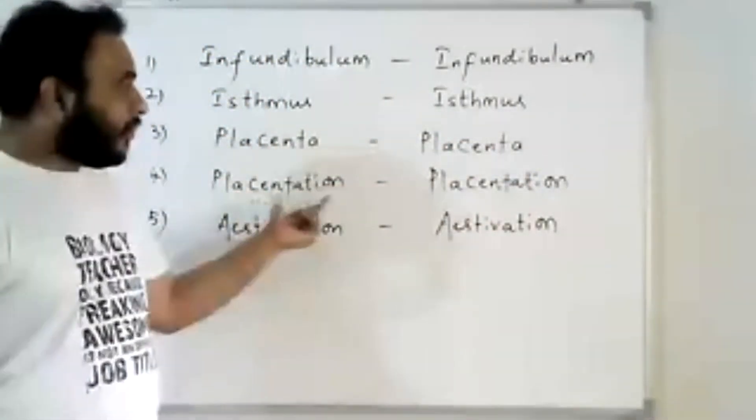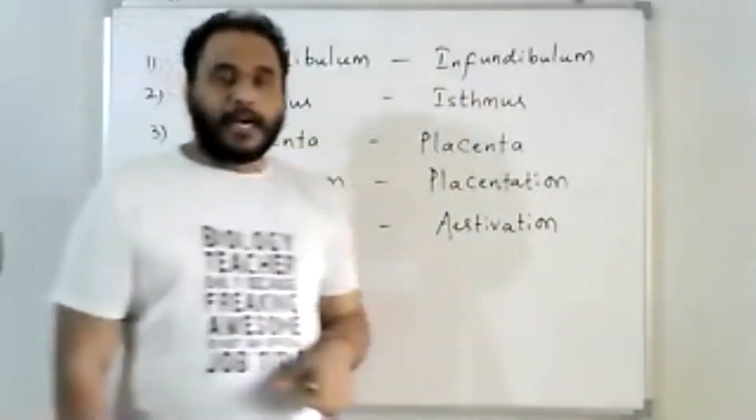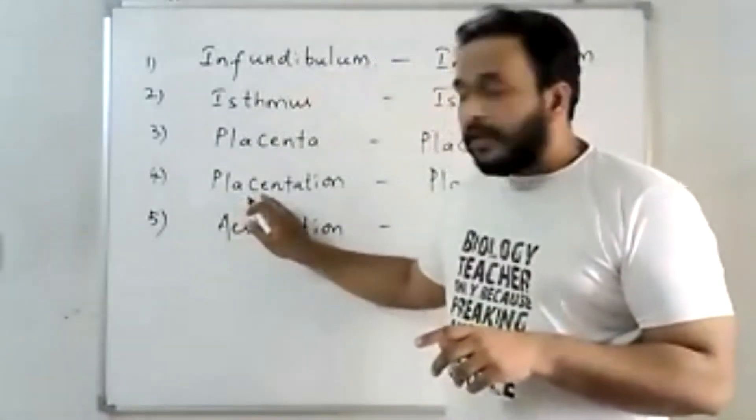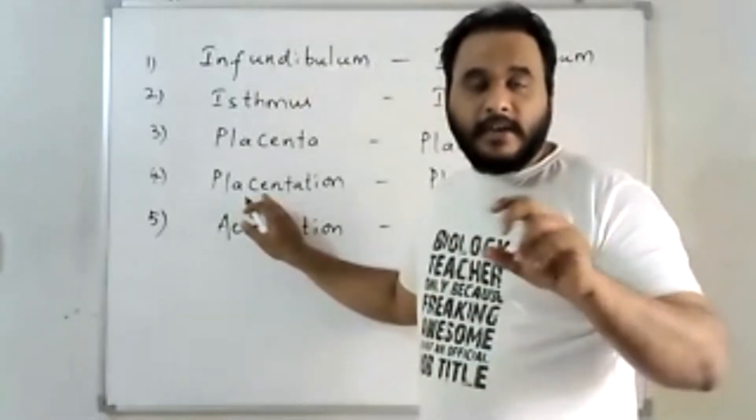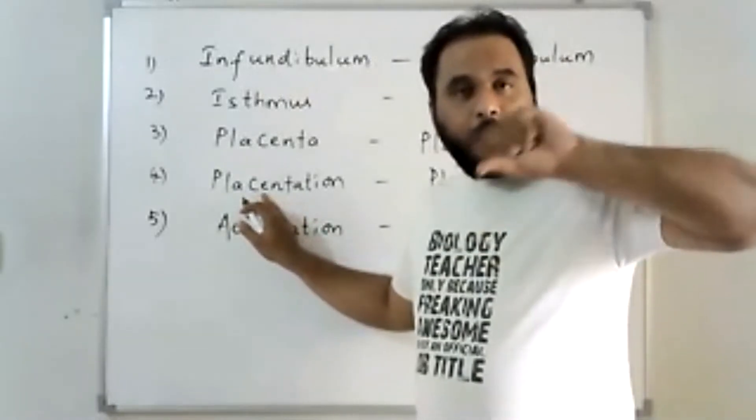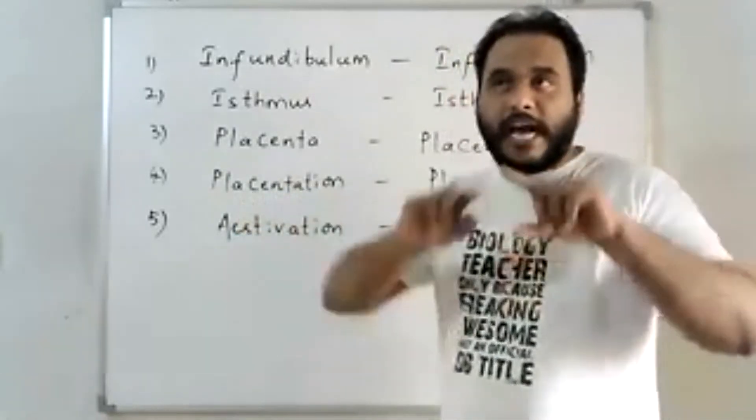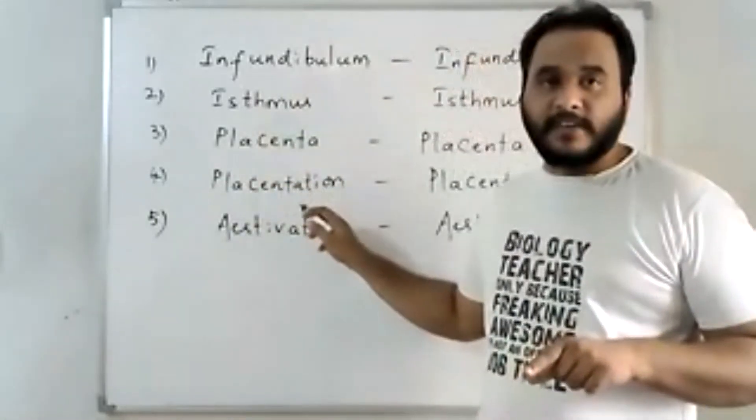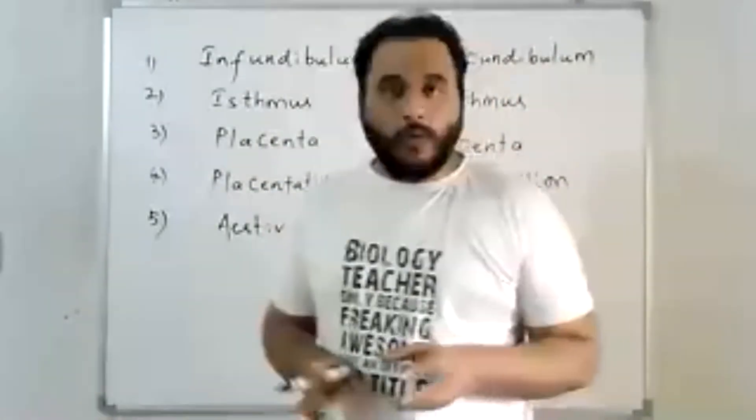Coming to placentation. It's very simple. Placentation. In the flower, in the bisexual and female flowers, the centrally located cushion-like tissue is called placenta, and ovules are attached to it. So the way how the ovules are attached to the placenta, that is called placentation. So the arrangement of ovules in the ovary, in the female flower and bisexual flower, that is called placentation.